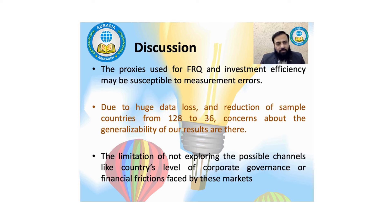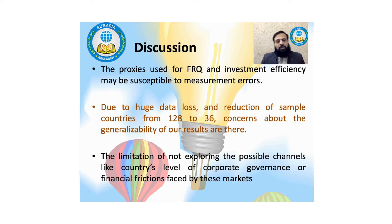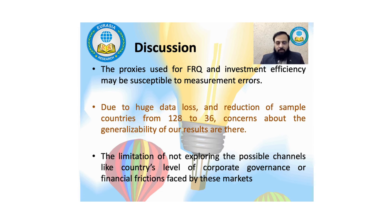Regarding limitations: three proxies were used for financial reporting quality and one measure for investment efficiency, which may be susceptible to measurement errors. The Morgan Stanley Capital International (MSCI) classification was used to identify markets as developed, emerging, frontier, or other. Starting with 128 countries, only 36 remained after constructing all variables, raising concerns about generalizability. Additionally, no channel variable was included that might influence the association between financial reporting quality and investment efficiency, such as investor protection levels or financial frictions faced by firms.